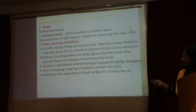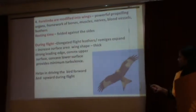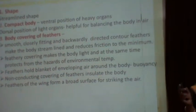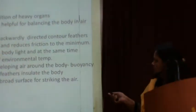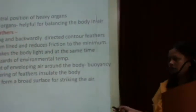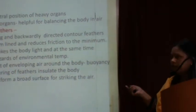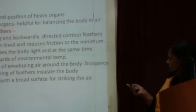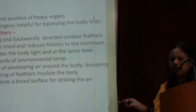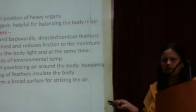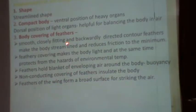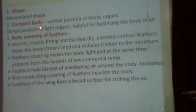The second important feature is the compact body. Heavy organs such as the alimentary canal, gonads, and kidneys are located at the ventral side. At the dorsal side, light organs such as the lungs are present, and lungs are always filled with air. Air bladders are also present in birds, located at the dorsal side, which helps in balancing the body in the air.